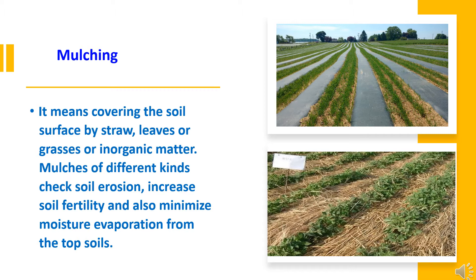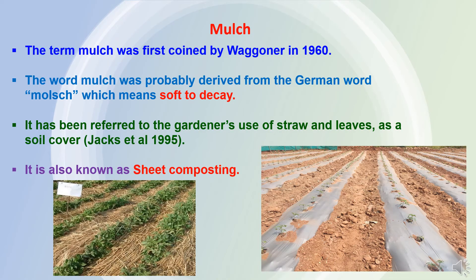On one side it is conserving the moisture; on another side it is playing an important role in soil conservation and creating favorable conditions for plant growth. The term mulch was introduced by Wegener in 1960 and it is derived from the German word mulch, which means soft to decay — meaning easy decomposition. Mulch has also been referred to the gardeners' use of straw and leaves as a soil cover, as per Jax et al. in 1995.